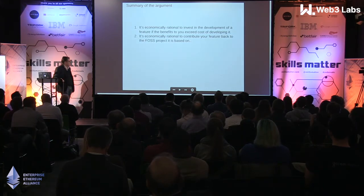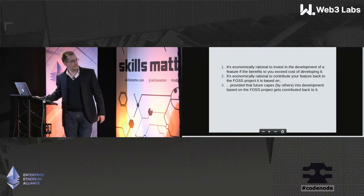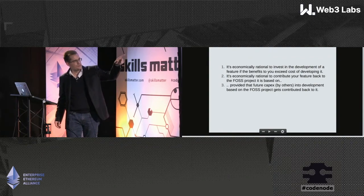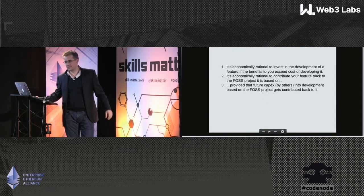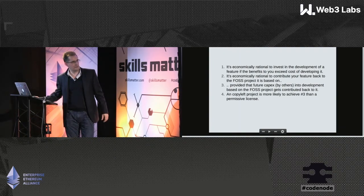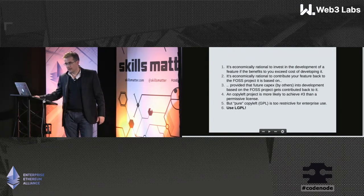Let me just wrap up by giving a summary of the argument. Point one: it's economically rational to invest in developing a feature if the benefits exceed the cost — that's a no-brainer. But it's also economically rational to contribute your feature back to the FOSS project it's based on, provided that future capital expenditure into development based on that project gets contributed back into it. This is where the distinction between permissive and copyleft licenses matters. A copyleft project is more likely to achieve that than a permissive license, but a pure copyleft license is too restrictive for enterprise use. So the conclusion is: use LGPL.